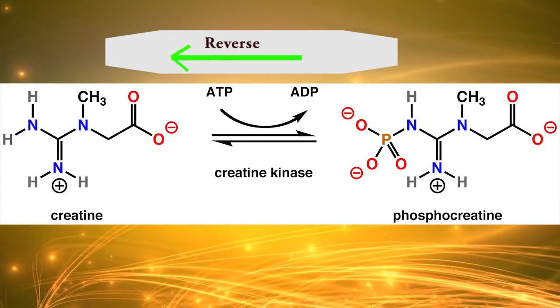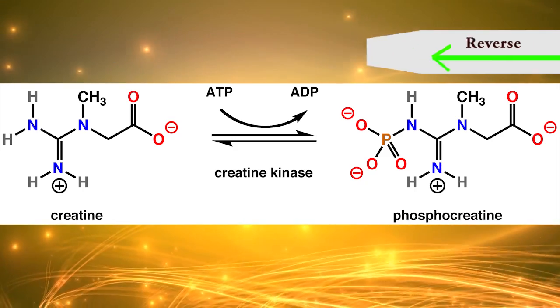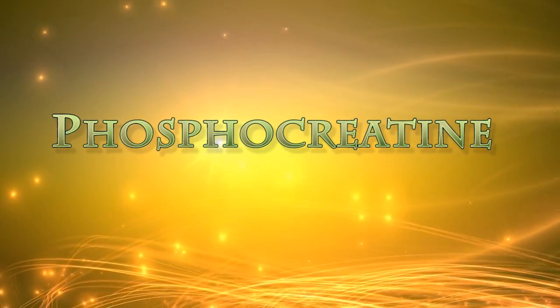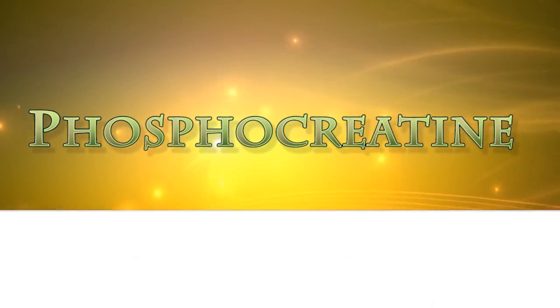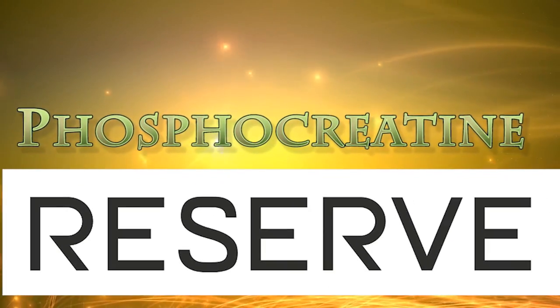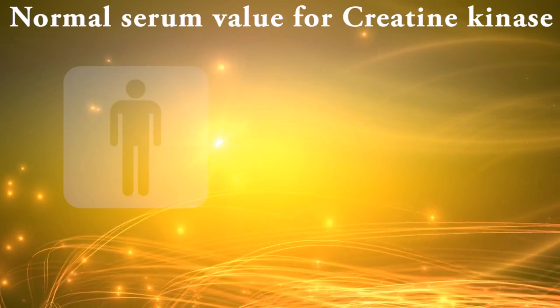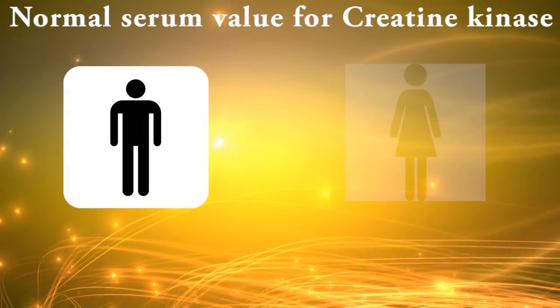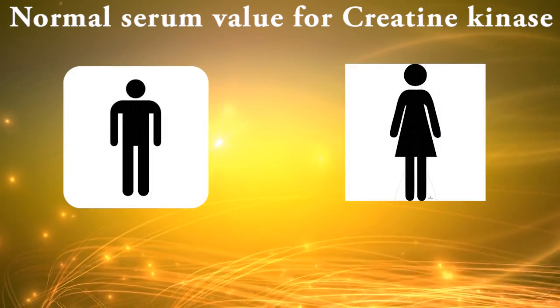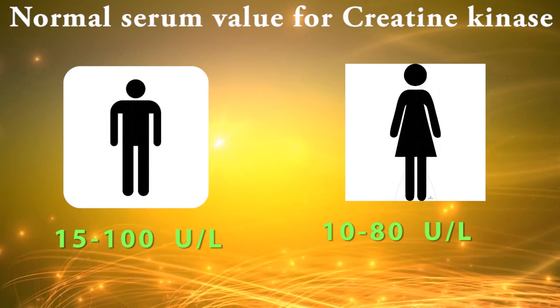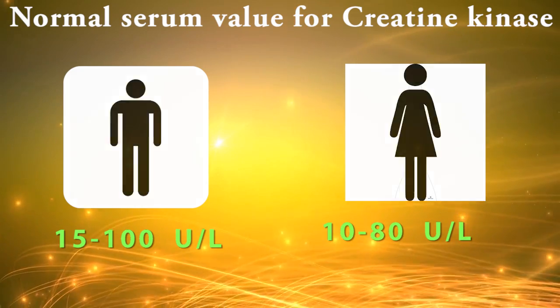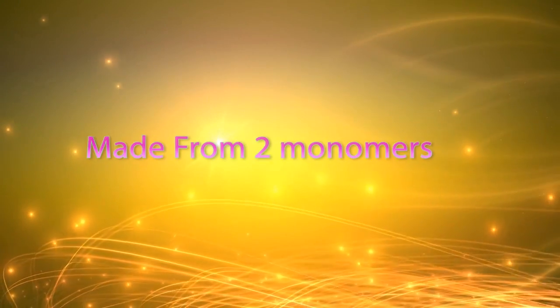Phosphocreatine serves as an energy reserve during muscle contraction. Normal serum values for creatine kinase are 15 to 100 units per liter for males and 10 to 80 units per liter for females.